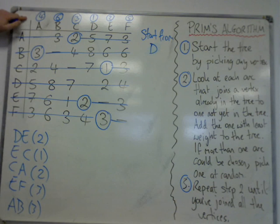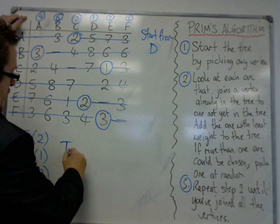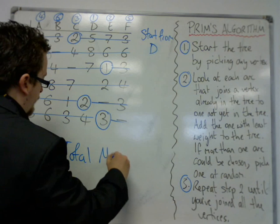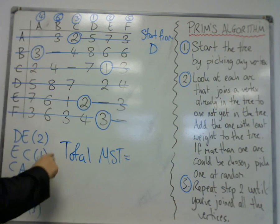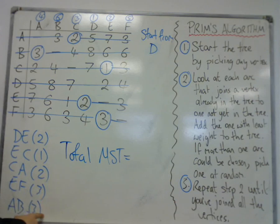And so we've got the total minimum spanning tree, which is equal to 11.